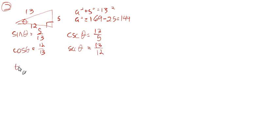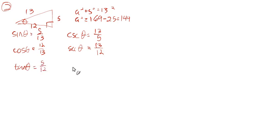Do the tangent. The tangent is opposite over adjacent — that's 5 over 12. And the cotangent would just be the reciprocal, 12 over 5.